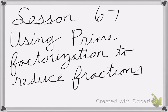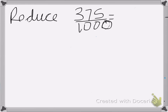In lesson 67, we're using prime factorization to reduce fractions. Let's say I have the fraction 375 over 1,000, and I want to reduce this number. One way to do that is to use prime factorization. I'm going to find the prime factorization of both numbers, starting with 375.